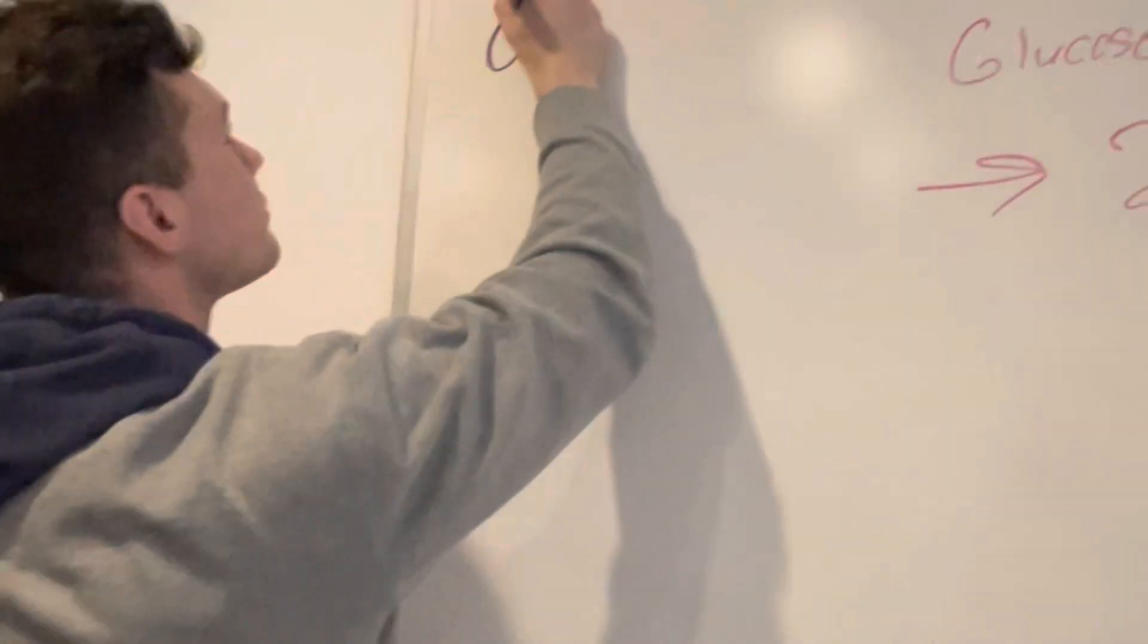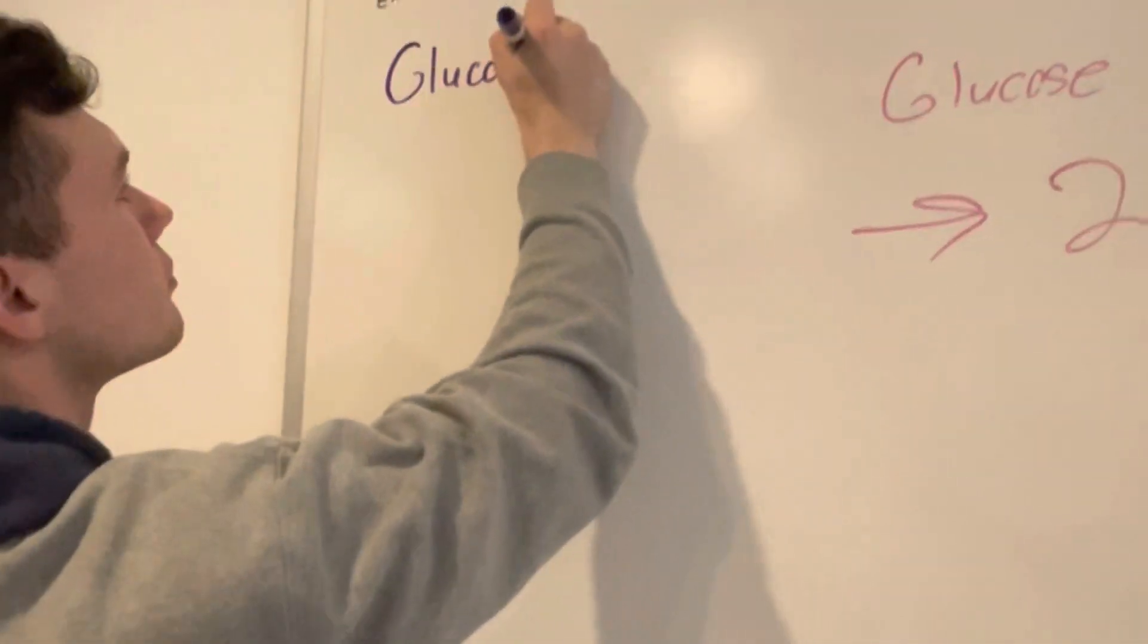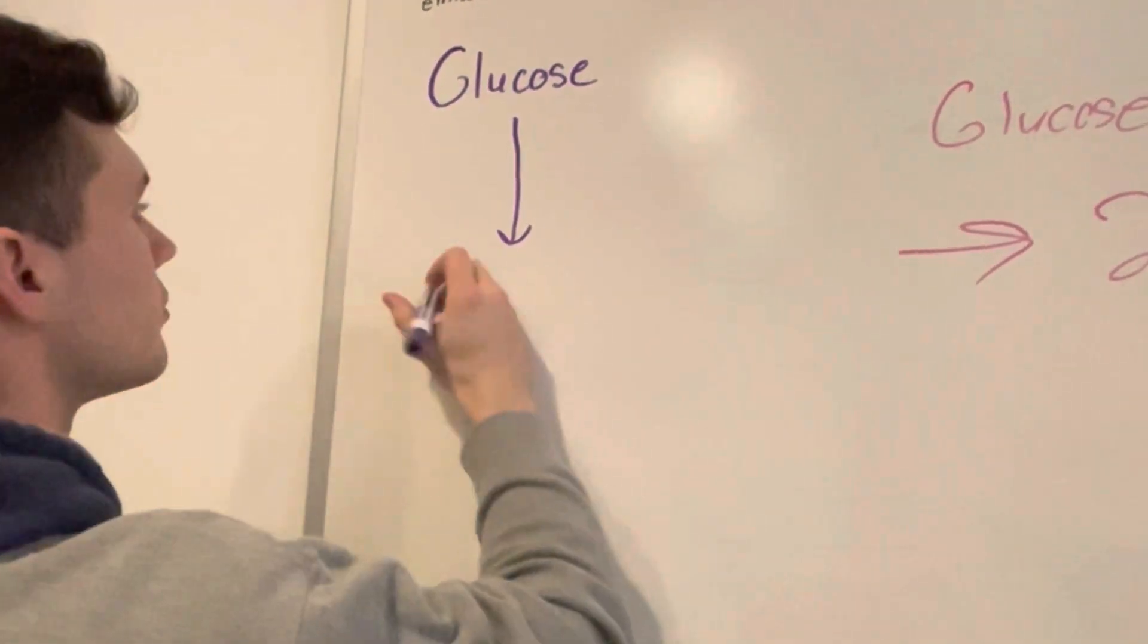Alright guys, we are going to start off with a basic skeletal structure of glycolysis. So starting with glucose, it's then reacted into glucose-6-phosphate.